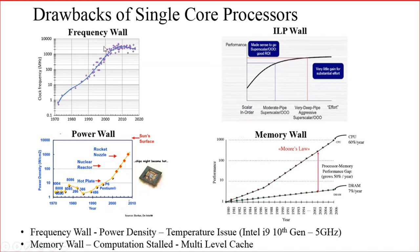So these are the four drawbacks of a single-core processor: frequency wall, ILP wall, power wall, and memory wall. Due to all these drawbacks, we are trying to go for the next type of processor known as the multi-core processor. These are the motivations behind the development of multi-core processors.